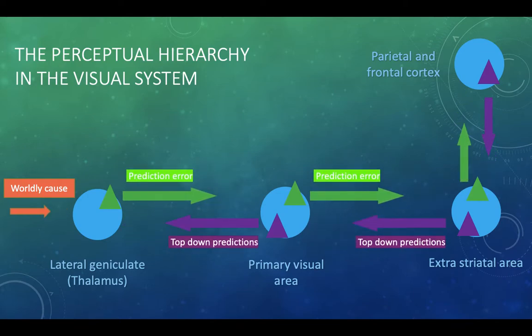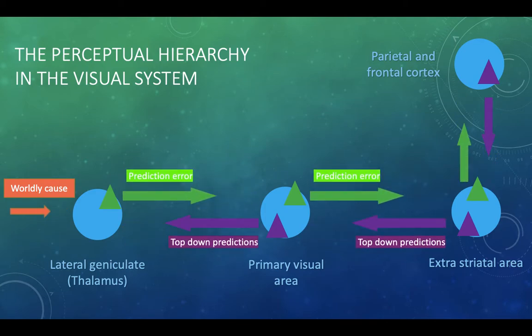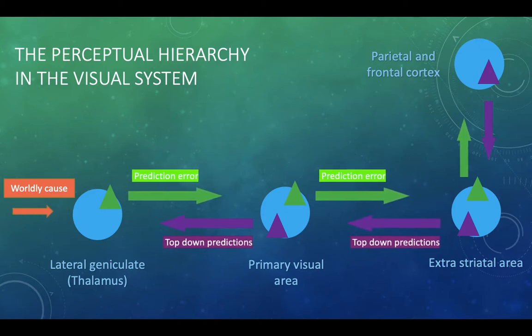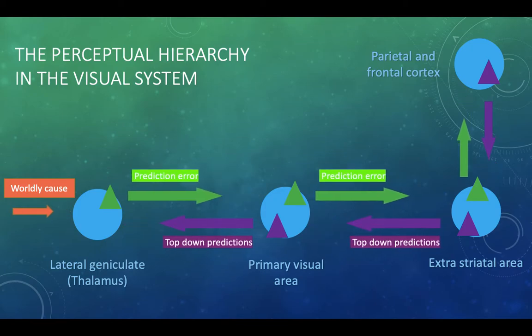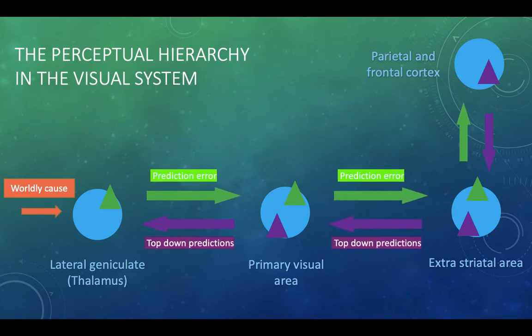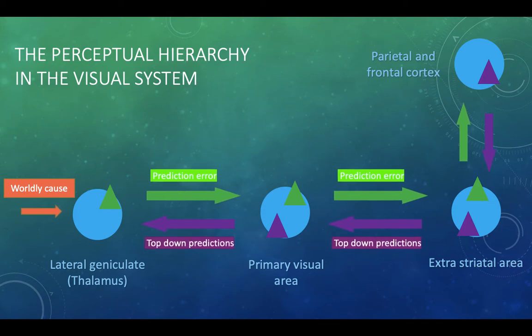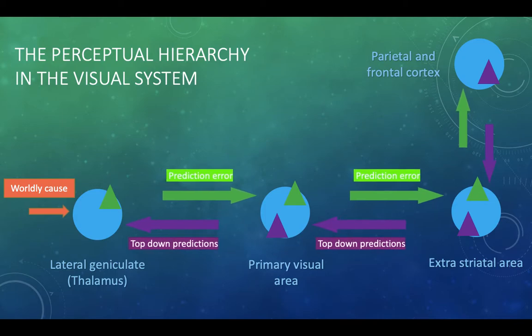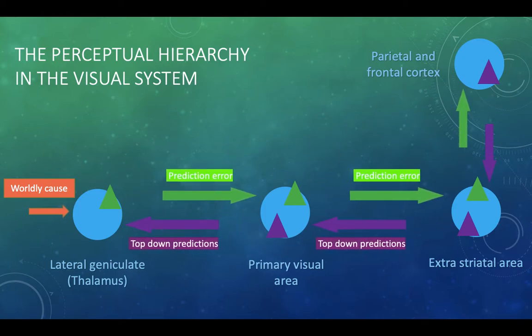So in a real world system, let's try and think, how is this going to work? Well, the primary visual area is going to be sending down its predictions about what the sensory input is going to look like. And then in the lateral geniculate, it's going to be looking at those predictions saying, is there something different? And then sending that prediction error up the hierarchy. So prediction error goes up the hierarchy and top-down predictions go down. And those predictions are those expectations.